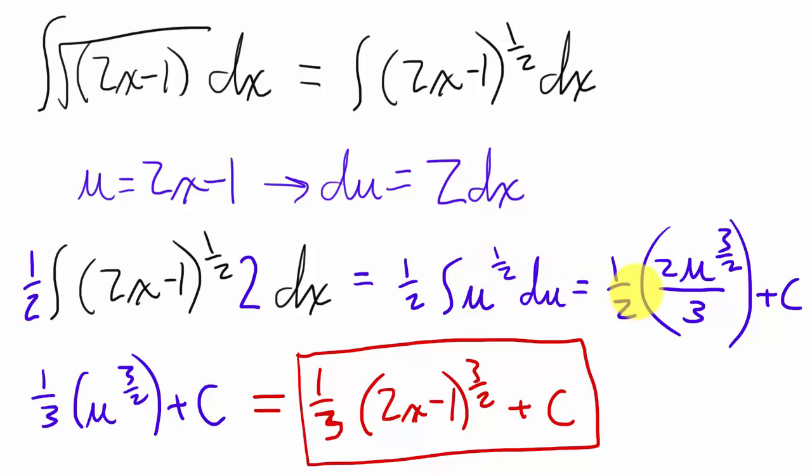Integrating that, we have 1 half of 2 thirds u to the 3 halves plus c. Cleaning that up, we have 1 third u to the 3 halves plus c.